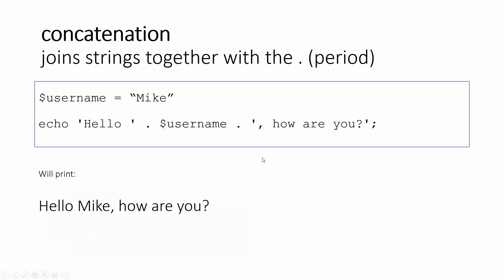Another way to incorporate strings and variables next to each other is using concatenation. In some languages they use the plus sign, but PHP uses the period to concatenate or join strings together. For instance, if I had a variable called username with Mike in there, and I'm echoing hello, then dot, username, dot, how are you? — it will take those three strings, concatenate them, put them together, and echo back the full sentence. Concatenation is something you'll be using quite a lot in PHP.